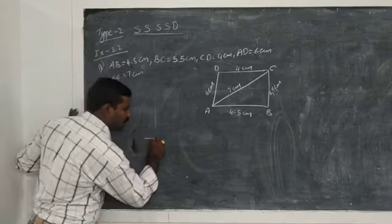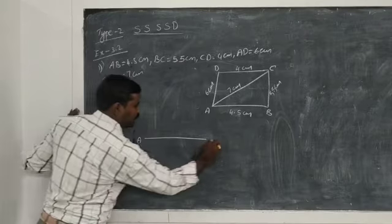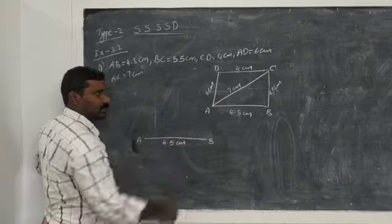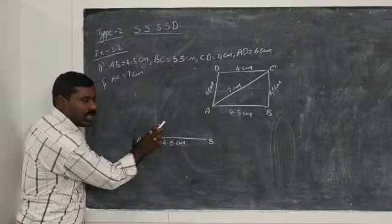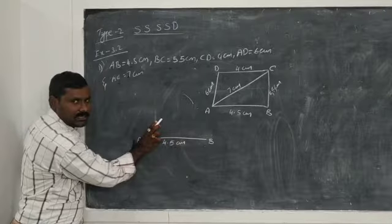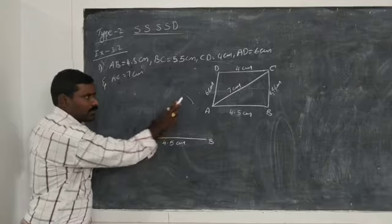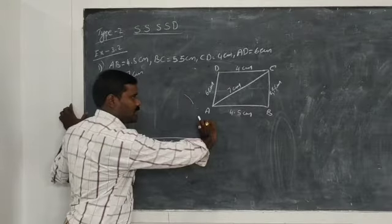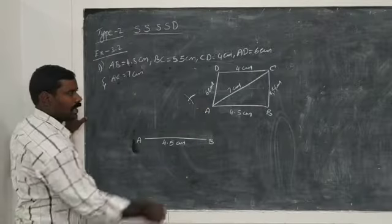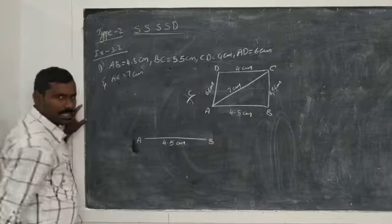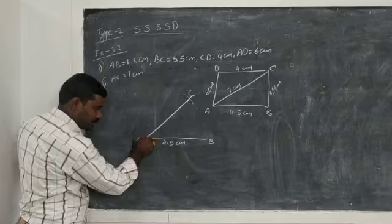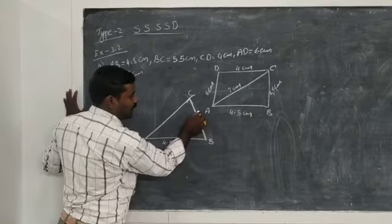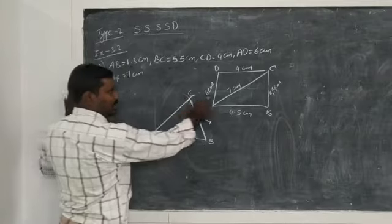Using the scale, draw one line segment AB with 4.5 centimeters. Now take 7 centimeters radius and center A, draw one arc. Then with 5.5 centimeters radius and center B, draw one more arc which intersects the first arc. This intersection point is C. Now join AC and BC with the scale. BC is 5.5 centimeters and AC is 7 centimeters.